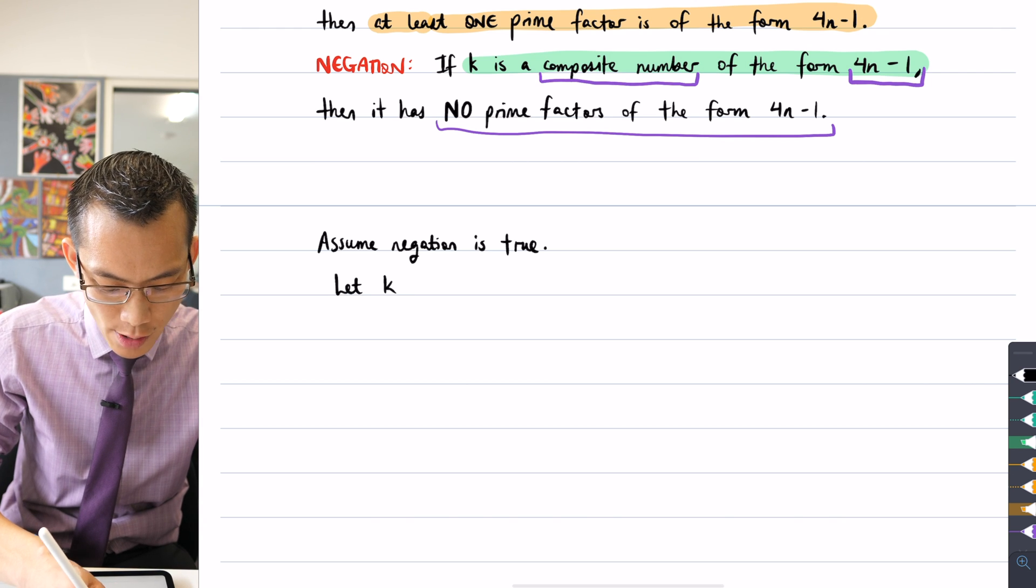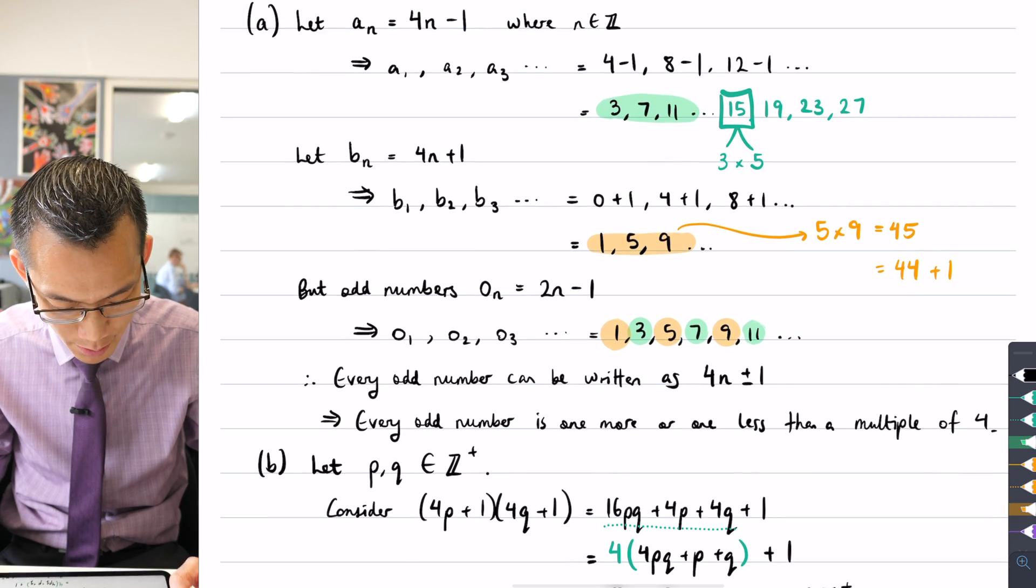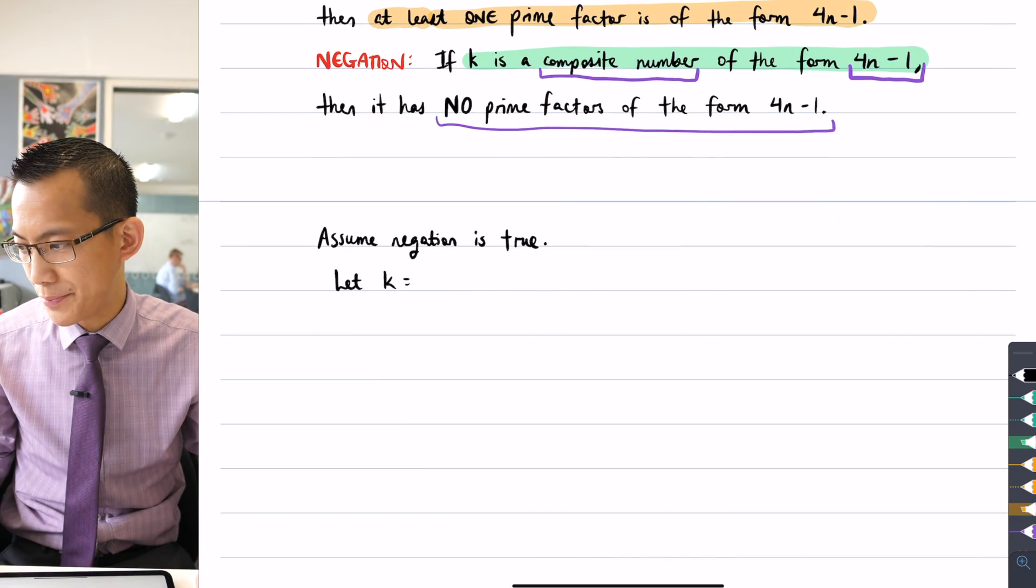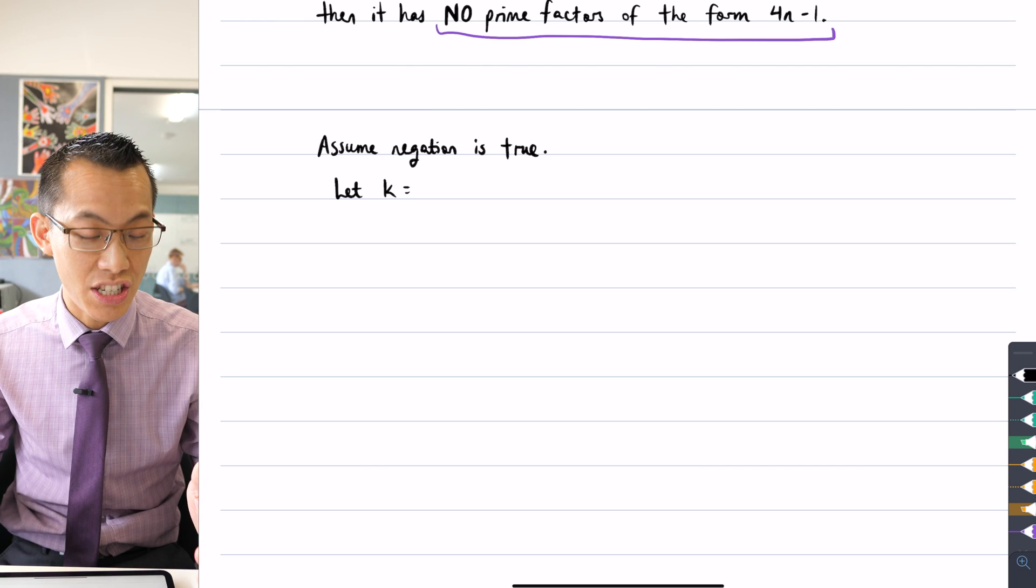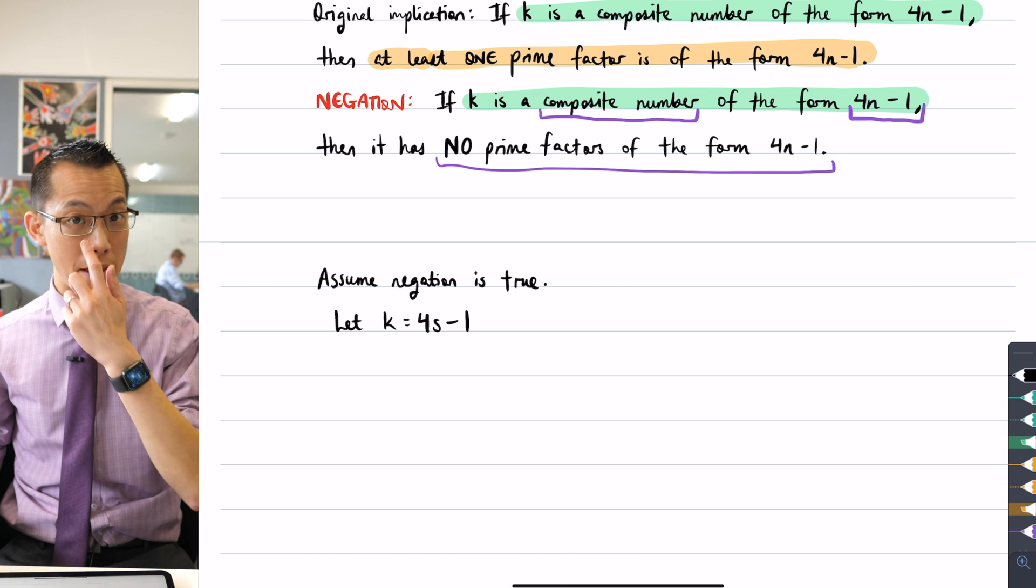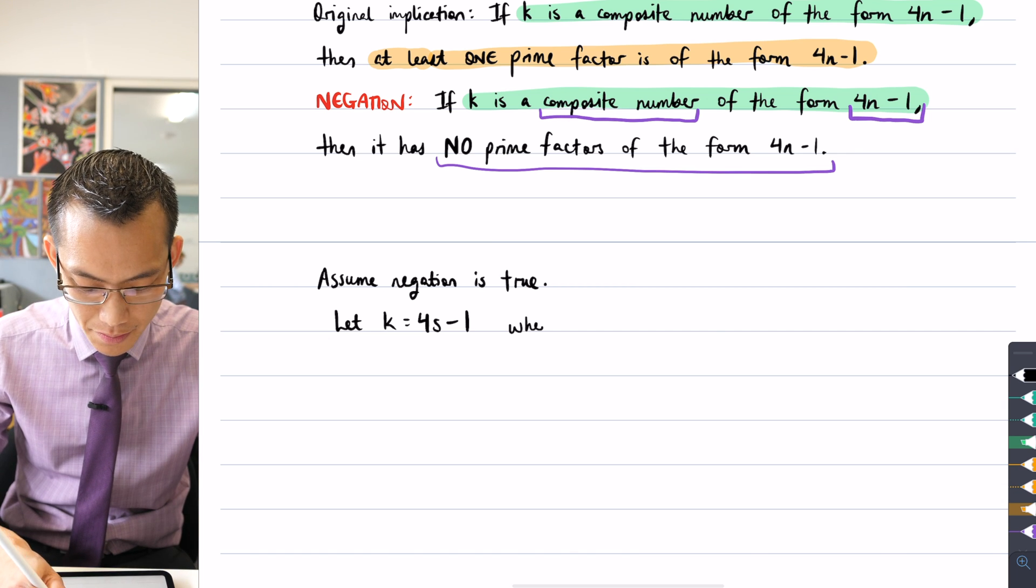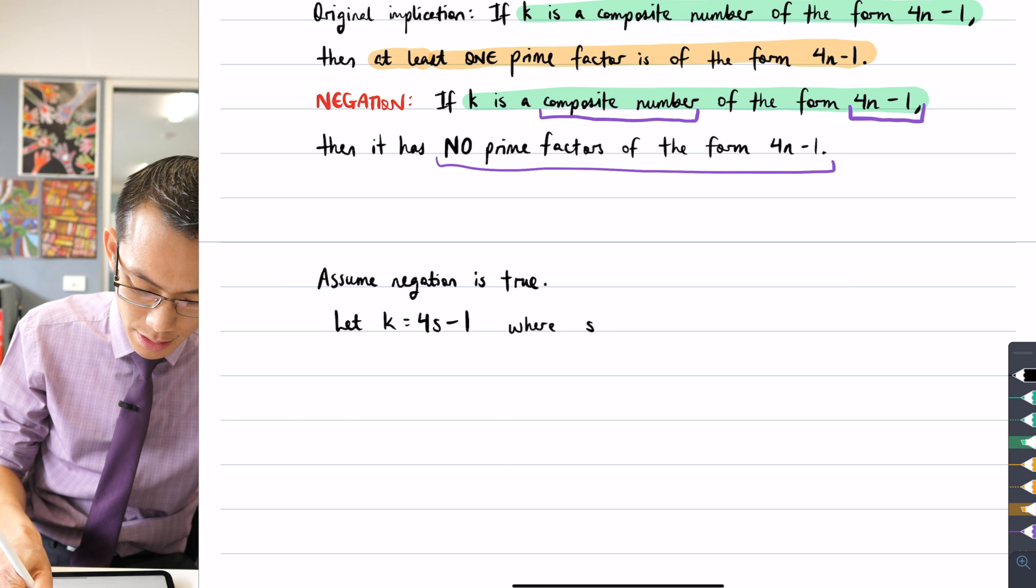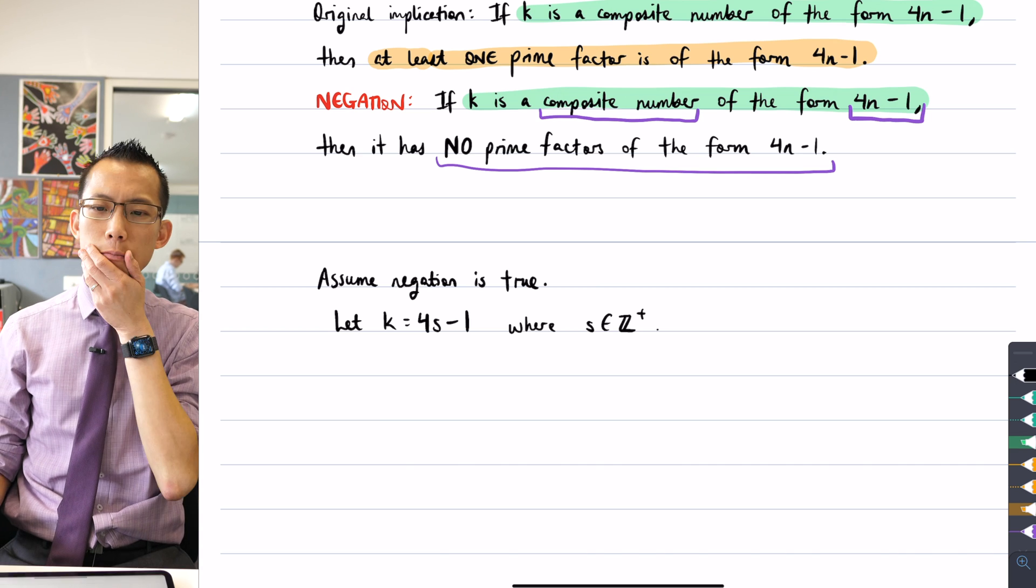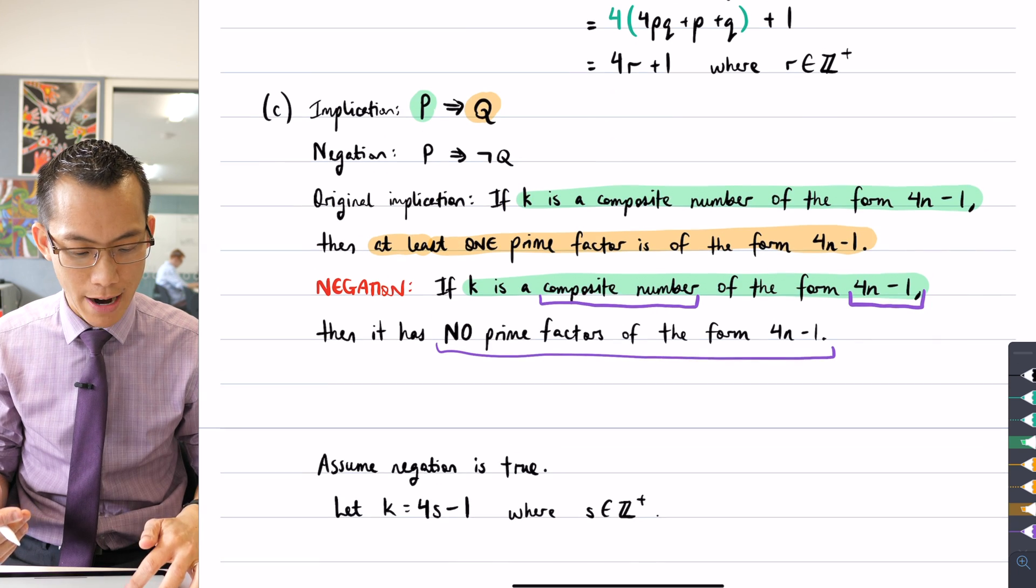So let's start with this one. If it's of the form 4n minus 1, then for some value of n, I can write k in this way. So let k equal 4s minus 1, and I need to say s is a positive integer. This is part C.